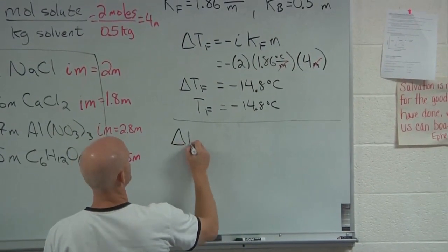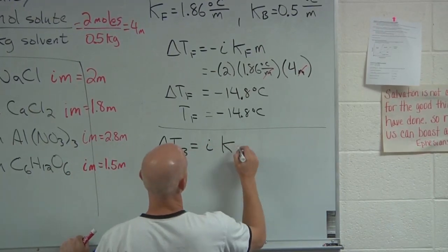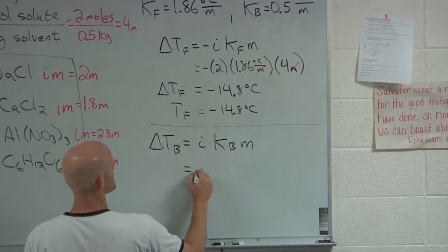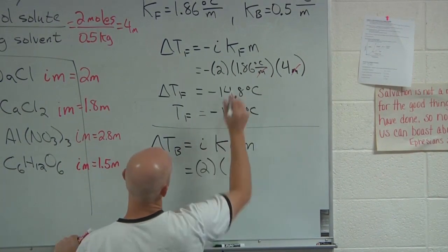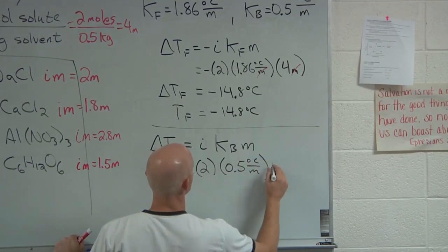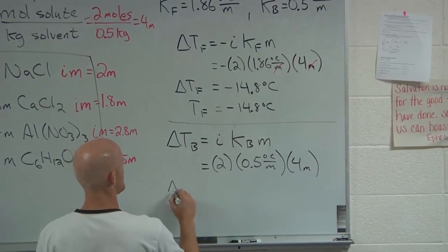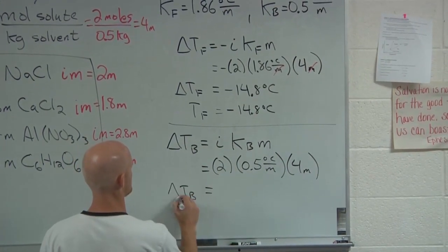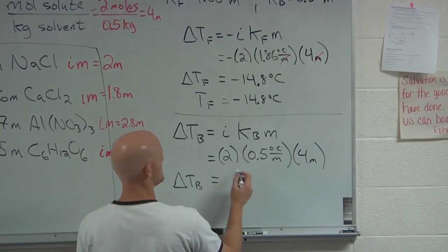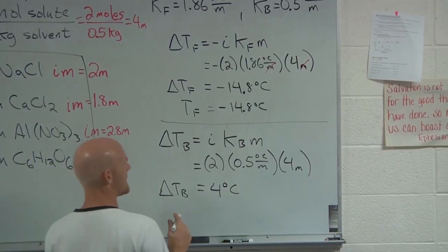So boiling point works the same way. Change in the temperature of the boiling point, i times Kb this time, times the molality. So in this case, van't Hoff factor is still 2. Boiling point constant is given as 0.5 degrees Celsius per molal, and we still have a 4 molal solution. And so in this case, what's the change in our boiling point come out to? Good. 2 times 4 is 8. 8 times 1 half is 4. And so it's a 4 degrees Celsius change.